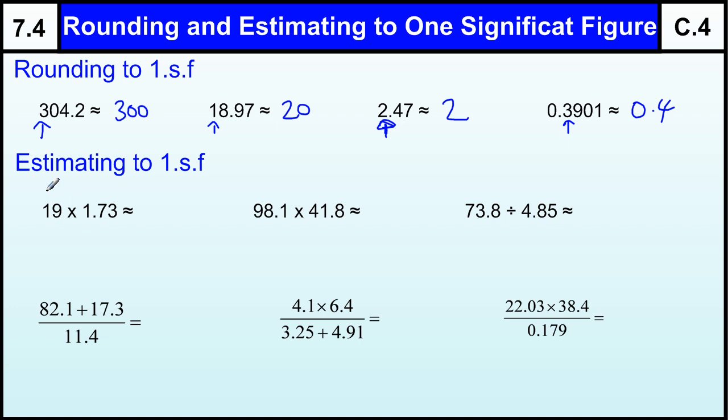So when we're looking at this number nineteen, we really should just call it twenty. And this number 1.73 to one significant figure, to the nearest whole number, is two. So that's approximately forty. No need to be any more accurate than that.